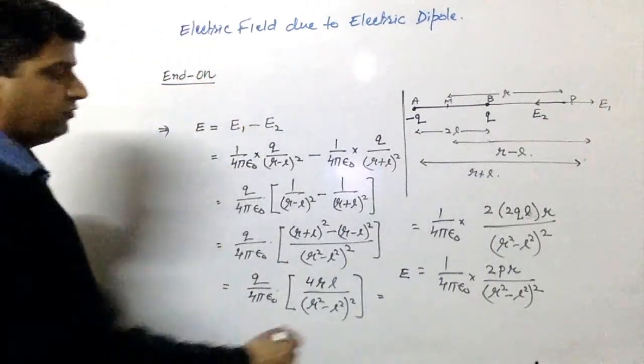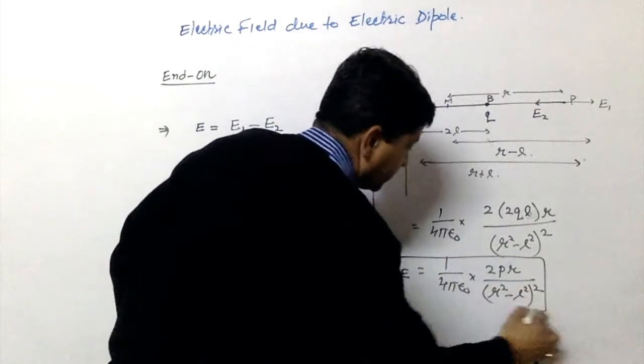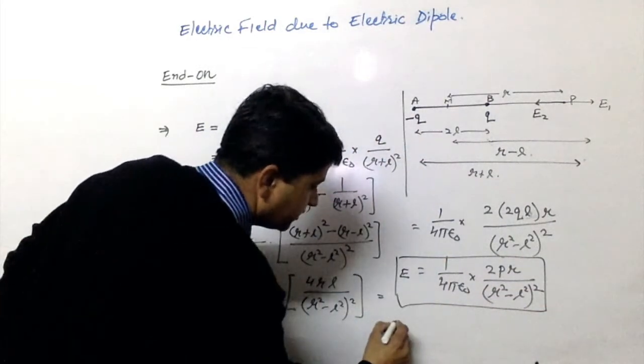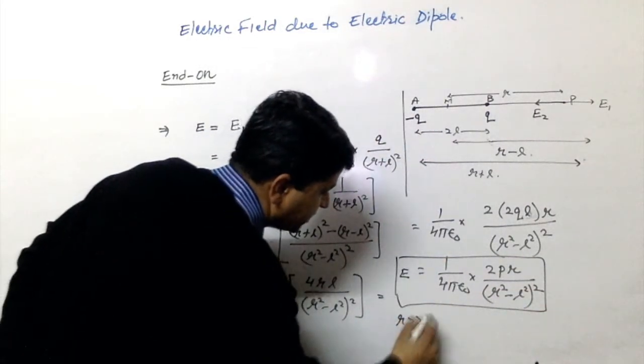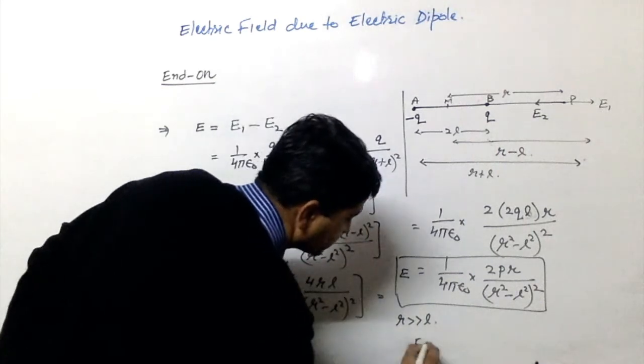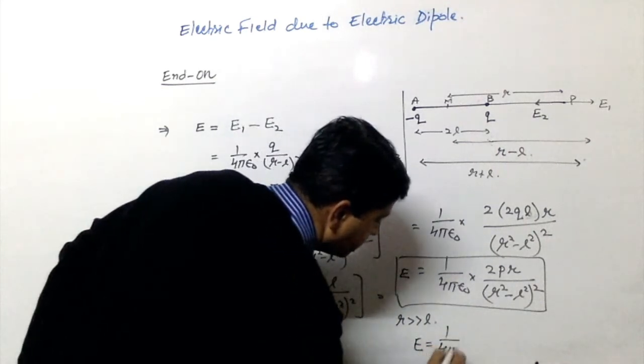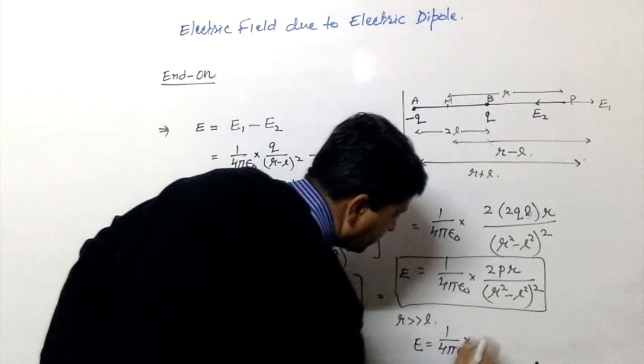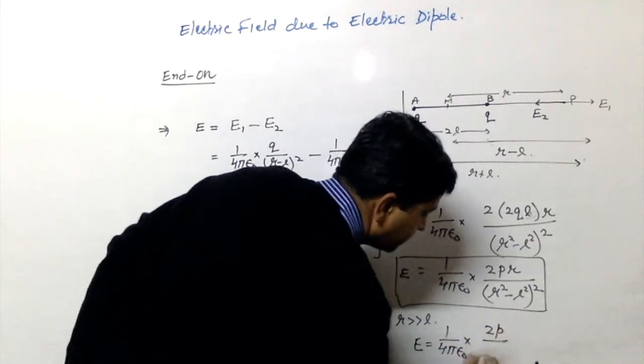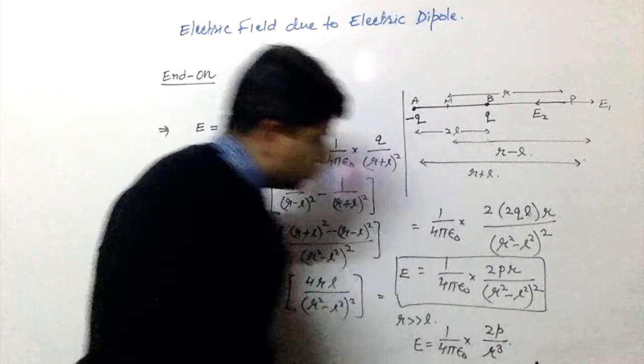Now, we will take a special case for this particular situation. If I say R is very large as compared to L, so expression for E will become 1 upon 4 pi epsilon naught, 2P upon R cube.